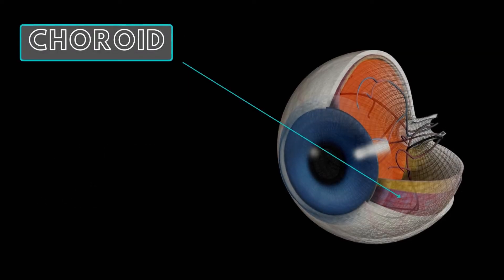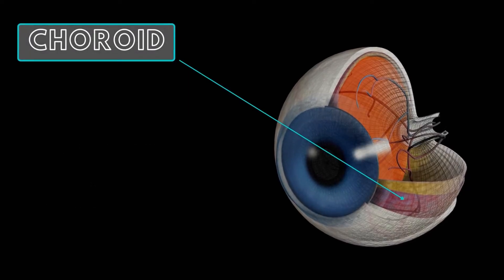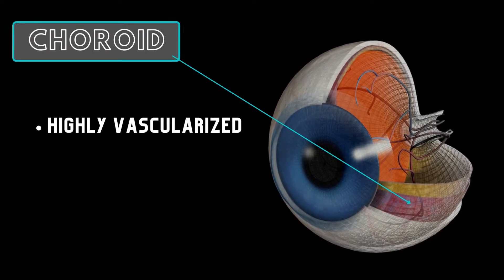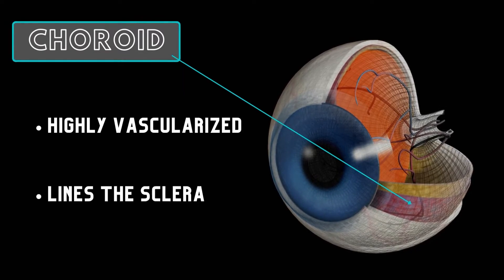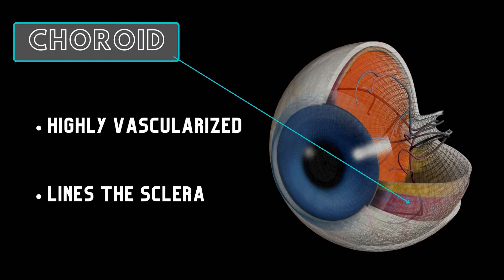The choroid is a thin and highly vascular membrane that lines the inner surface of the sclera. Posteriorly, the choroid is pierced by the optic nerve, and anteriorly, the choroid is attached to the ciliary body. The ciliary body includes the ciliary ring, ciliary process, and ciliary muscles.